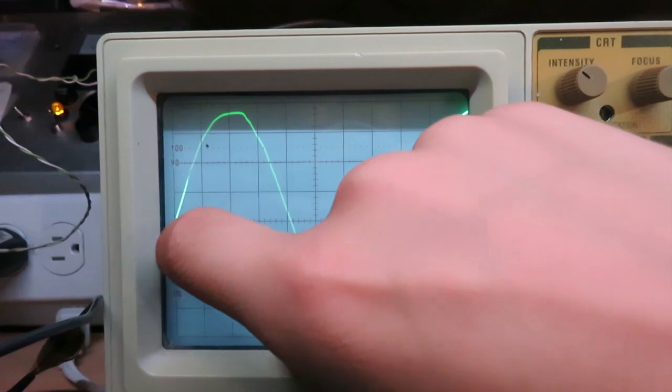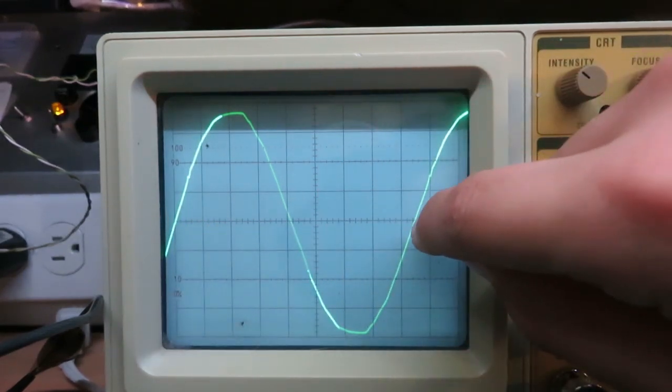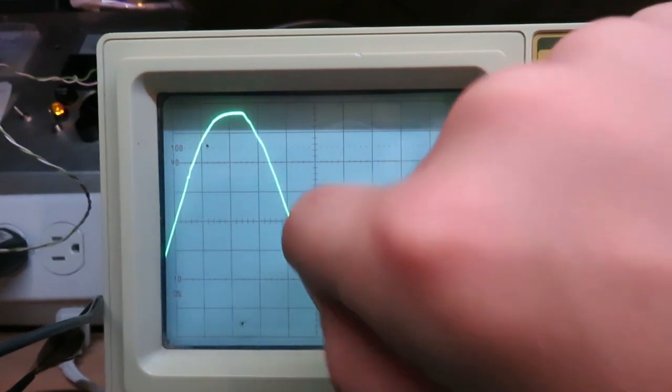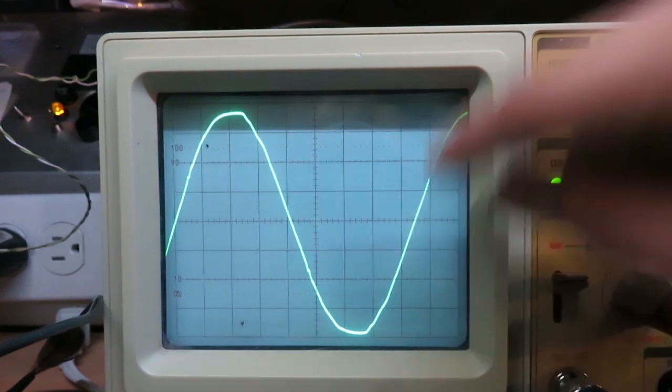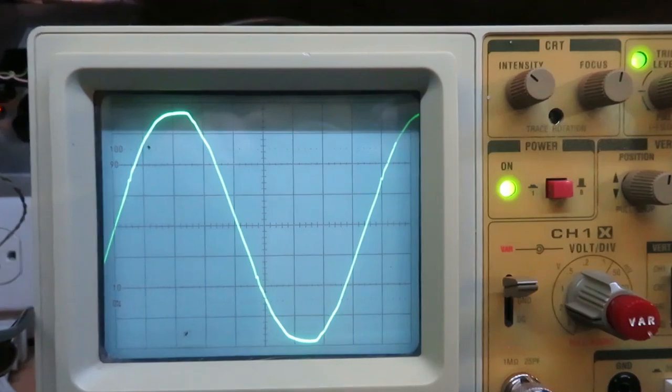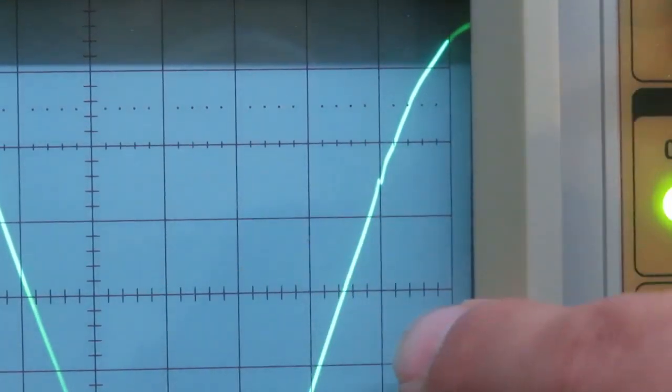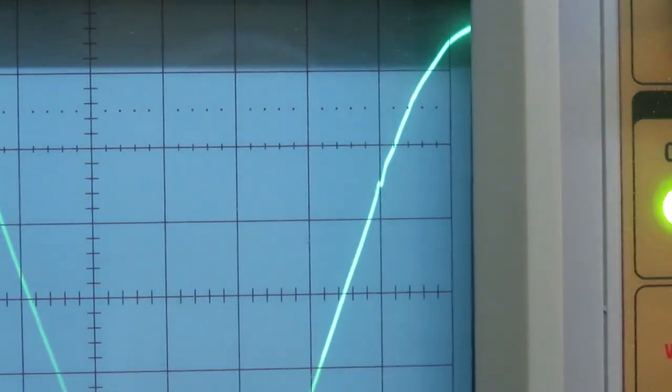So we'll start over on this corner right here and we'll count the divisions over for a complete cycle. So here would be one, two, three, four, five, six, seven, eight, nine, looks like about nine and a half divisions there. I'll see if we can zoom in there. You can see the end of the cycle ends right in half there. So that'd be about nine and a half divisions.